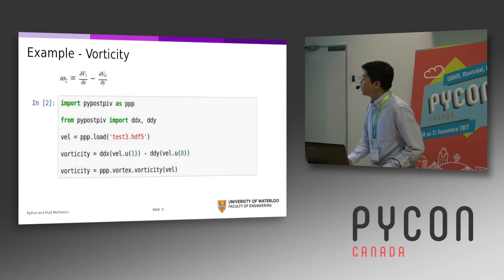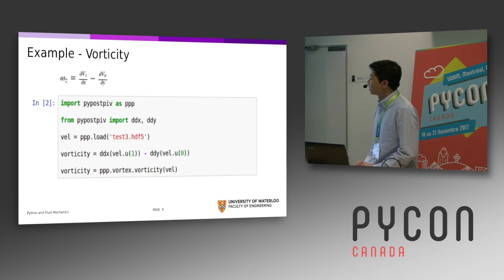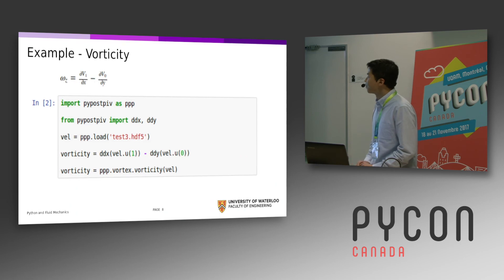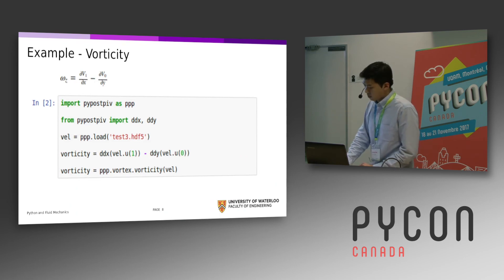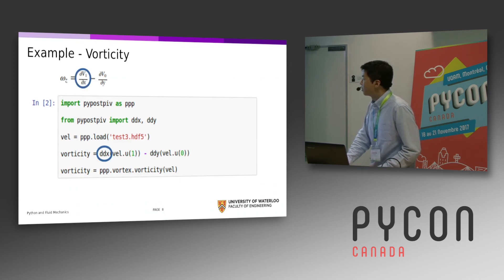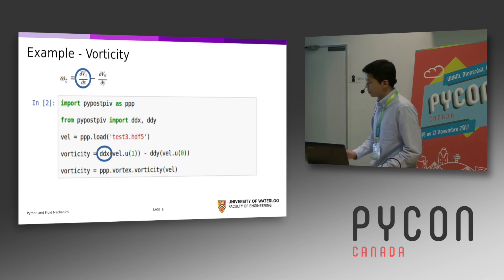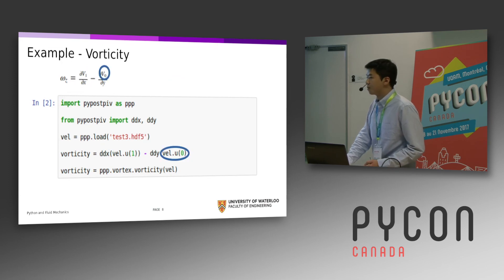How about something with derivatives? Vorticity is a way to characterize the level of 'spinniness' in a fluid, and mathematically it is computed like this. Because we've implemented the basic mathematical derivative function, you can easily translate the mathematics into code — derivatives correspond to derivatives and velocity components are velocity components again.